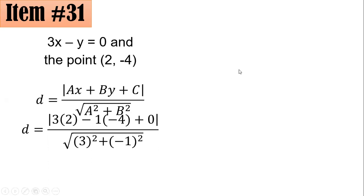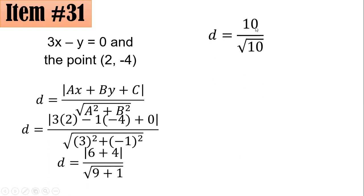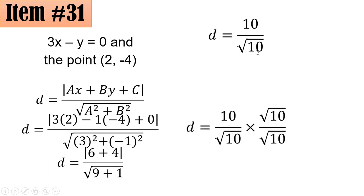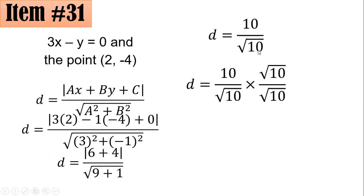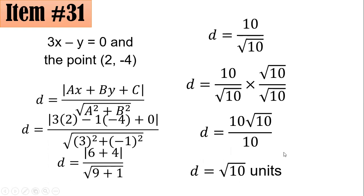The numerator simplifies to 6 plus 4 plus 0, all over the square root of 9 plus 1. So the numerator is 10, and the absolute value of 10 is still 10, all over the square root of 10. Multiplying both numerator and denominator by square root of 10, this becomes 10 times square root of 10, all over 10, and 10 divided by 10 becomes 1. Hence, the distance between this line and point is square root of 10 units, letter B.